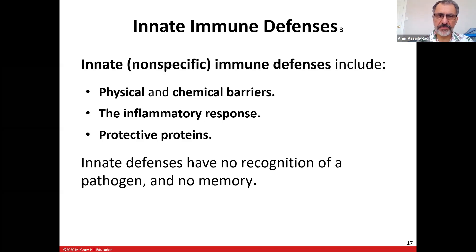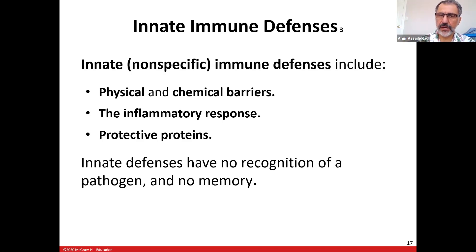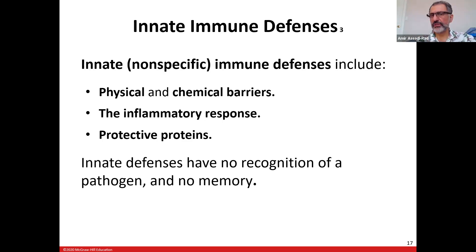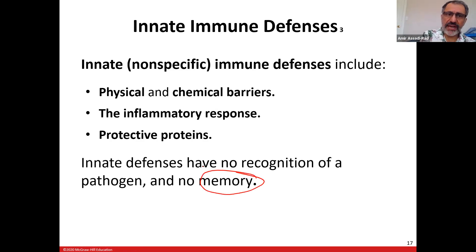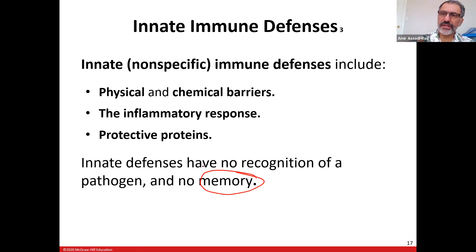Innate immunity does not recognize anything specific — it attacks anything that gets into the body, and there's no memory. Unlike adaptive immunity, if you are reintroduced to a pathogen the response is the same. Memory means if you had adaptive immunity, next time you come across it there is a faster response.